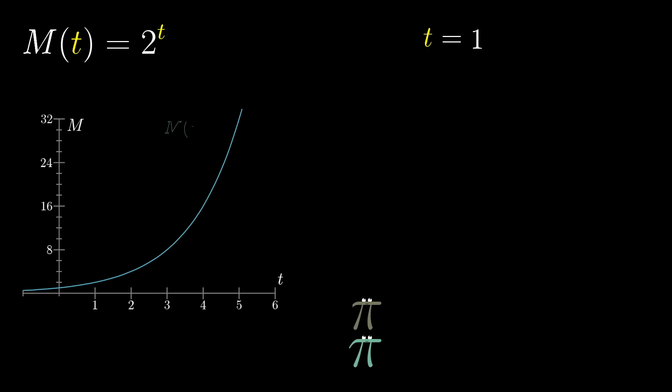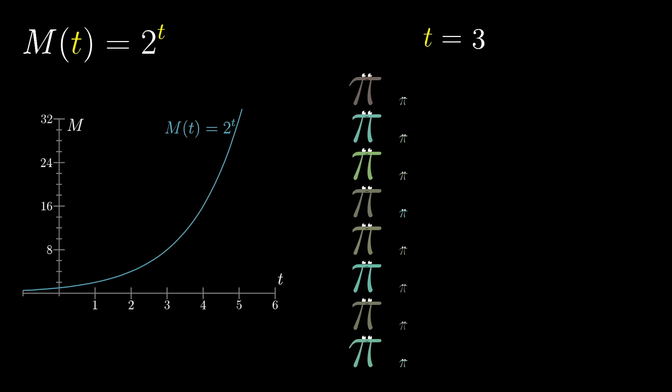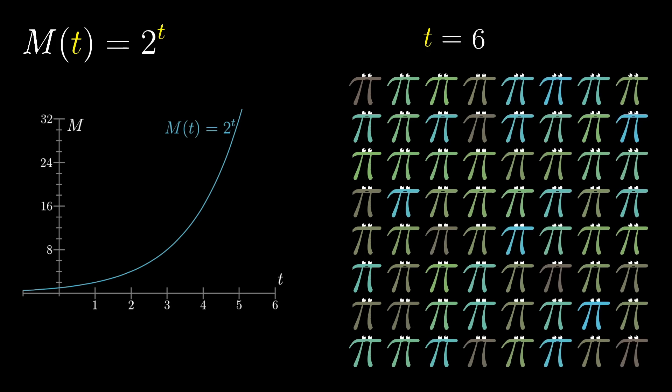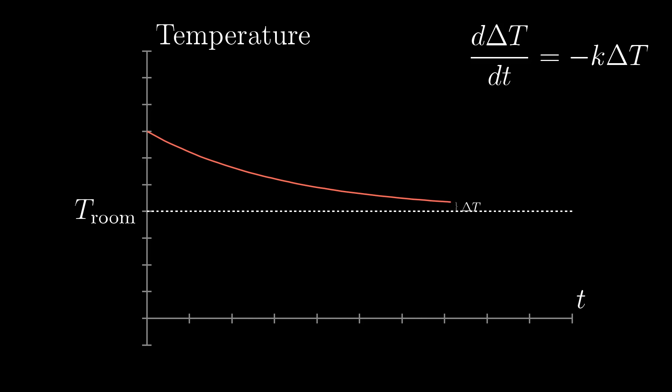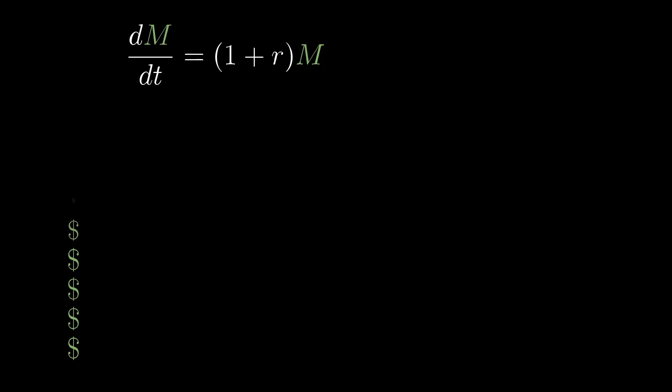All sorts of natural phenomena involve some rate of change that's proportional to the thing that's changing. For example, the rate of growth of a population actually does tend to be proportional to the size of the population itself, assuming there isn't some limited resource slowing things down. And if you put a cup of hot water in a cool room, the rate at which the water cools is proportional to the difference in temperature between the room and the water. Or said a little differently, the rate at which that difference changes is proportional to itself. If you invest your money, the rate at which it grows is proportional to the amount of money there at any time.